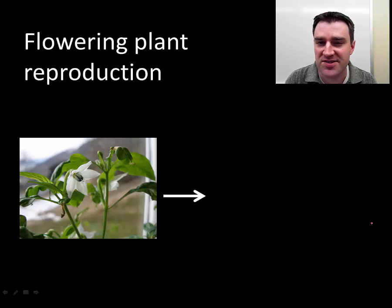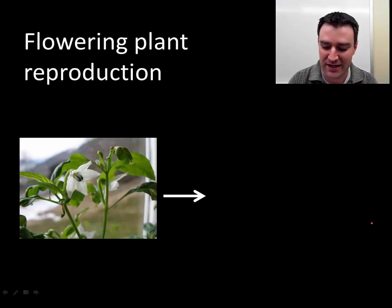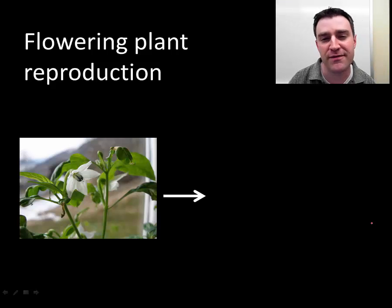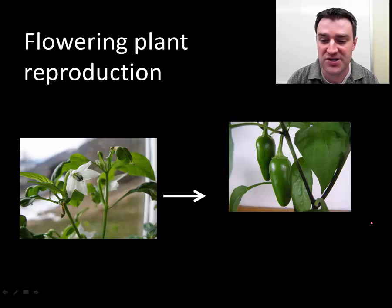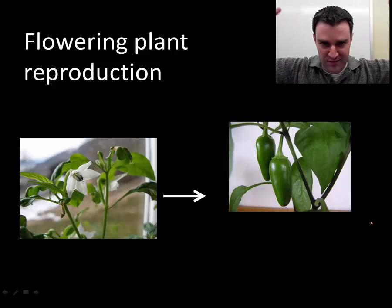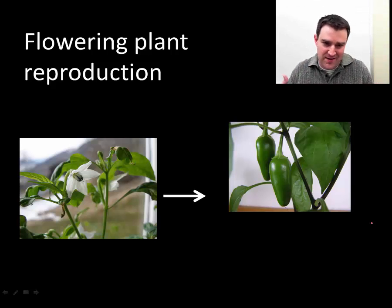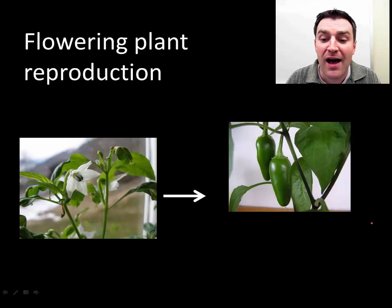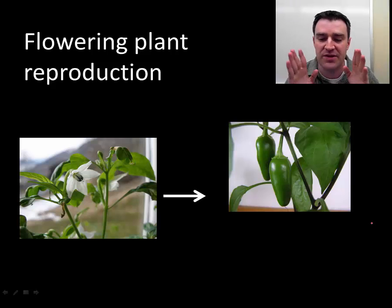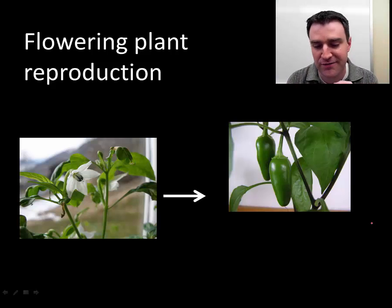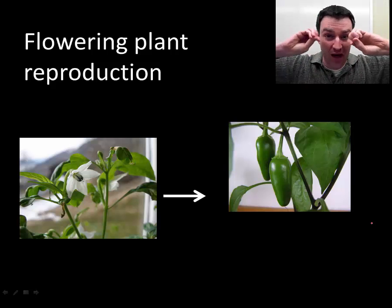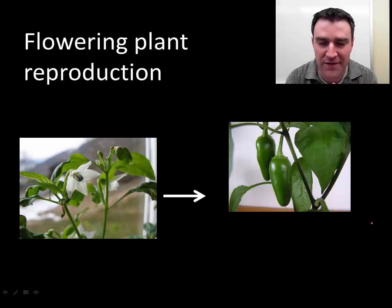Let's talk about what flowers do if they successfully pollinate — you can even artificially pollinate flowers with brushes from different plants; this is actually a jalapeno plant. Part of the flower will shed its petals and develop into a fruit. The purpose of a fruit structure is to help get the offspring far away from the parent — plants wouldn't want to drop their offspring right around them because then they'd be competing with their own children for survival, which wouldn't be good.